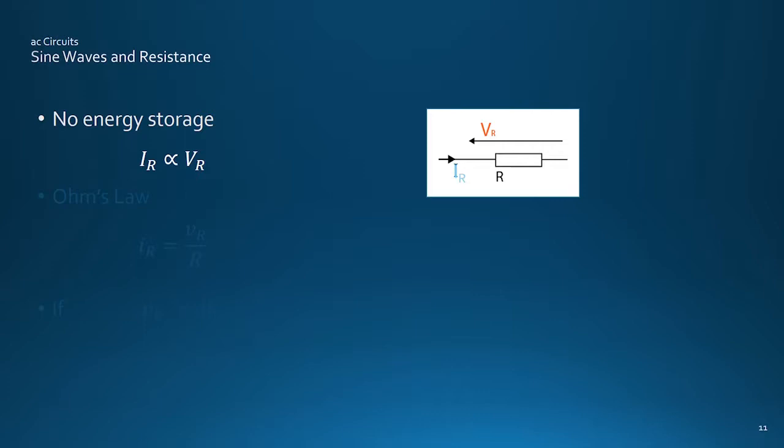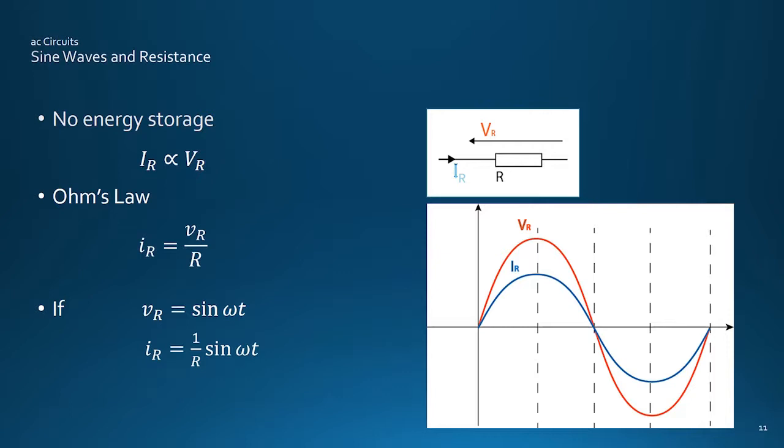Now the current, or flow of charge in a pure resistor with no internal energy store, has to be directly related to the voltage forcing the flow. Ohm's law gives the resistance in ohms as simply the ratio of the voltage dropped across the component and the current passing through it. So, if the applied voltage is a sine wave, then the resistor current is also a sine wave at the same phase.